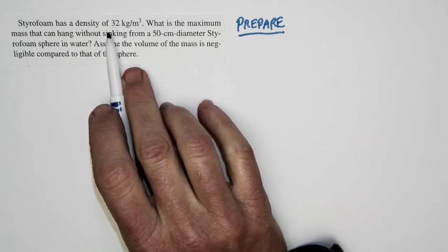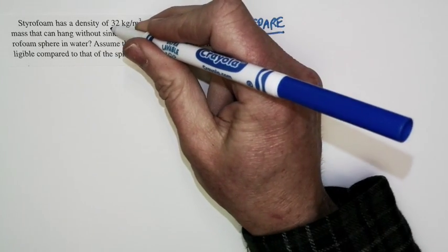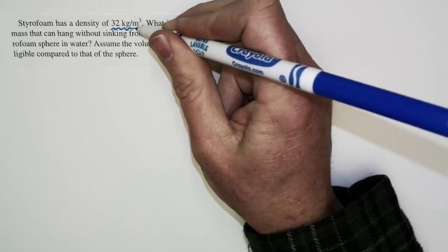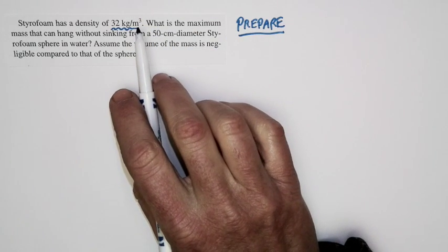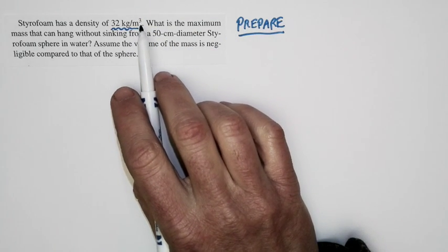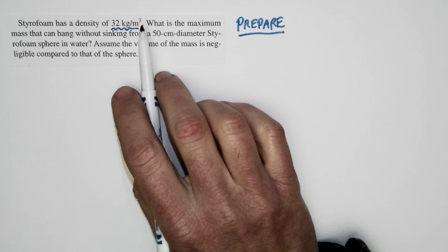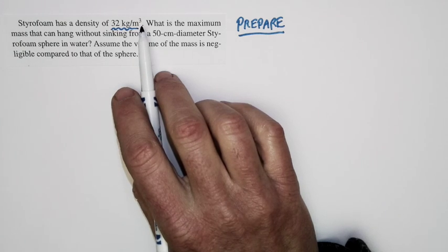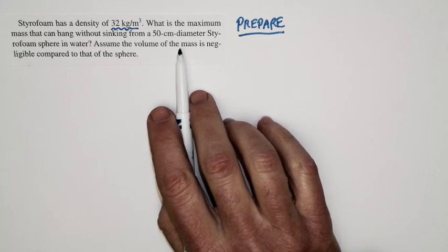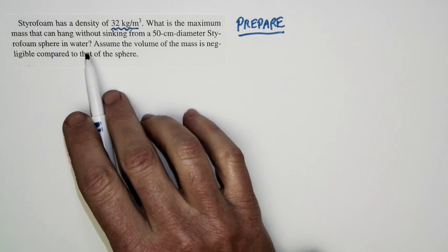Well, the density of water is a thousand kilograms per cubic meter, and so this is basically negligible. When you put this underwater, it's displacing a tremendous amount of water, and as a consequence, there'll be a huge buoyant force. The huge buoyant force means that I can suspend a significant mass from it.